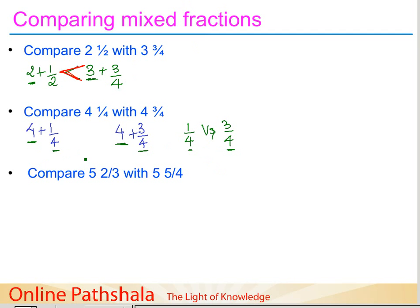These are like fractions, and we know that for like fractions, whichever fraction has the greater numerator is greater. Three by four has a greater numerator than one by four, therefore four and three by four is greater than four and one by four.